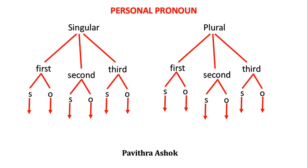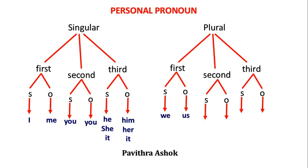In singular, first person: subject is I, object is me. In singular, second person: subject is you, object is you. In singular, third person: subject is he, she, it; object is him, her, it. In plural, first person: subject is we, object is us. In plural, second person: subject is you, object is you. In plural, third person: subject is they, object is them.